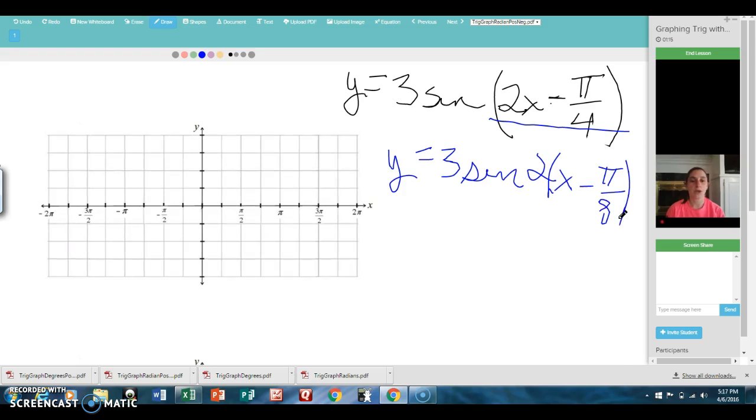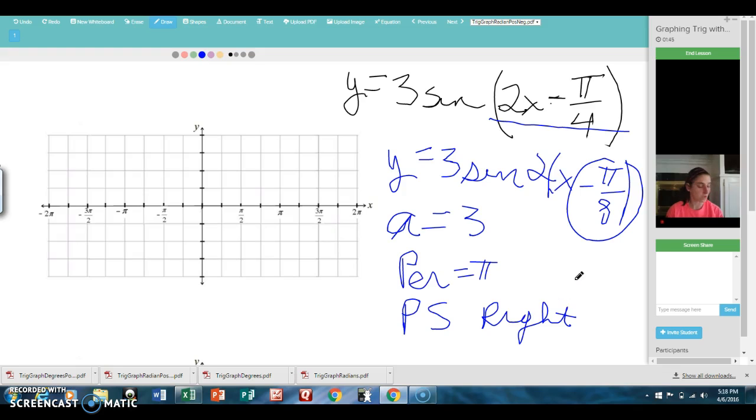All right, so let's record the important stuff. The amplitude is 3. The period is 2 pi over 2, which is just pi. And the new thing, the phase shift, is this number—we use the opposite of the sign. So if it says negative, we're really going to the right because it's a transformation. So we're going to go to the right, pi over 8 radians.